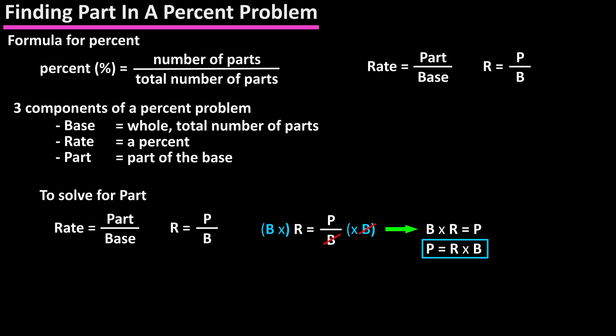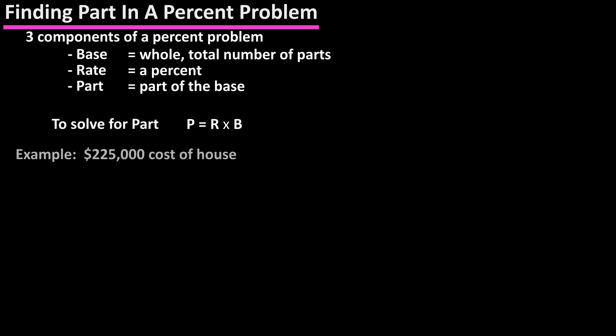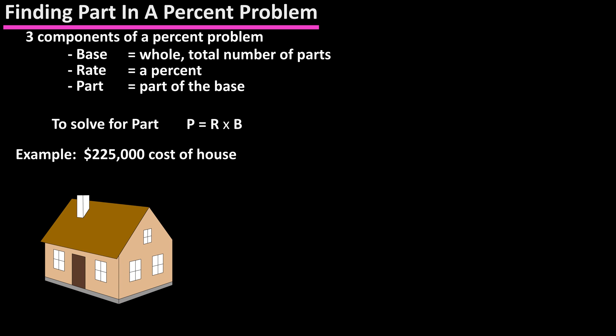As an example, let's say that a couple purchases a house for $225,000. They must pay a real estate commission of 6.2% on the purchase. How much money is the commission?